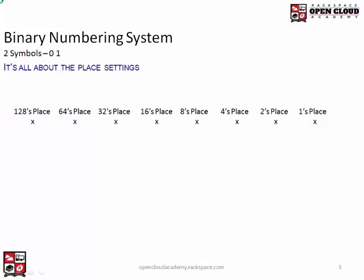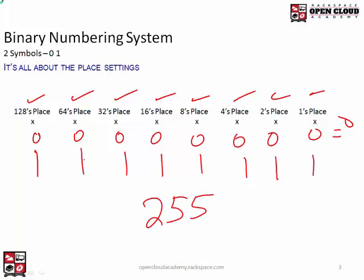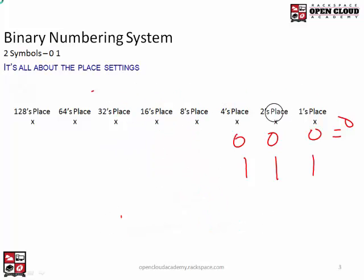With the binary system, the place values are just doubling: 1, 2, 4, 8, 16, 32, 64, 128. All I'm doing is doubling. The next place setting after 128 would be 256. If I draw all zeros, that equals zero. If I fill them up with all ones, I add 128 plus 64 plus 32 plus 16 plus 8 plus 4 plus 2 plus 1, and I get 255. So all ones in a byte equals 255.